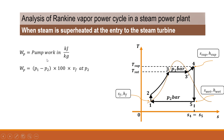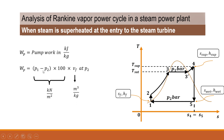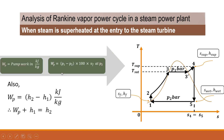Pump work WP is expressed as the change in pressure multiplied by specific volume, since the pump handles water. P1 minus P2 is in bar, so we multiply by 100 to convert to kilopascals (kN/m²). Specific volume at condenser pressure is in m³/kg, giving units of kN·m/kg, which equals kJ/kg. So pump work is expressed in kJ/kg.